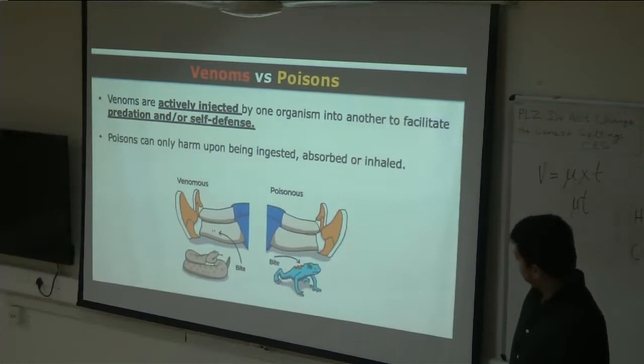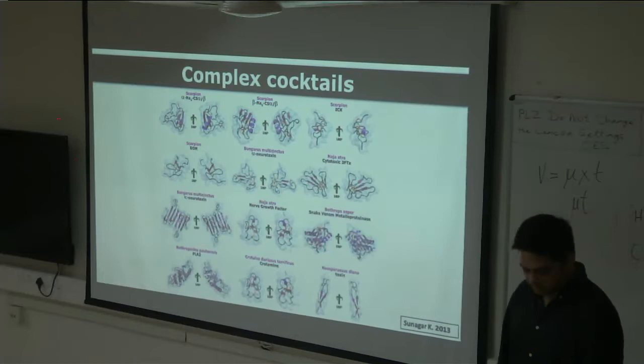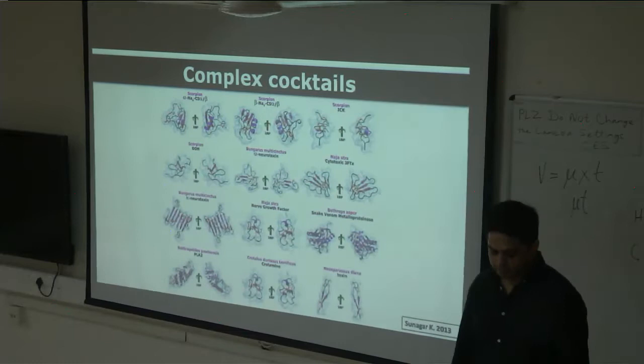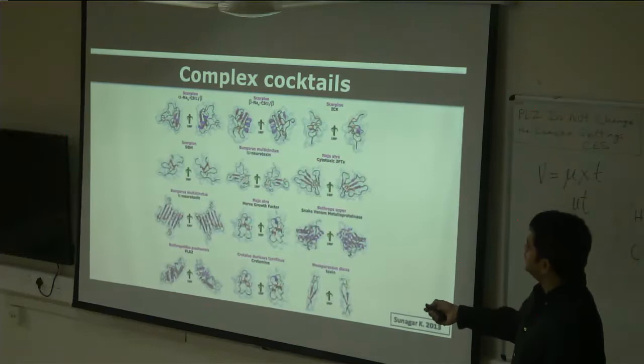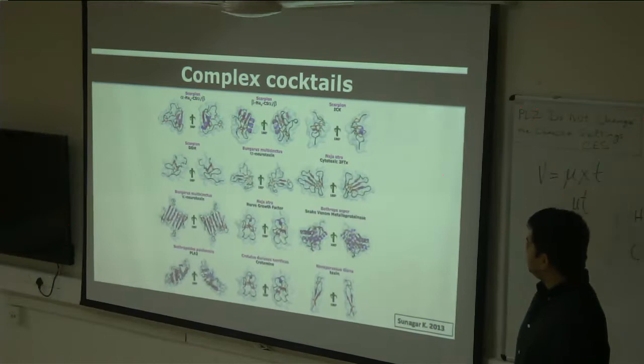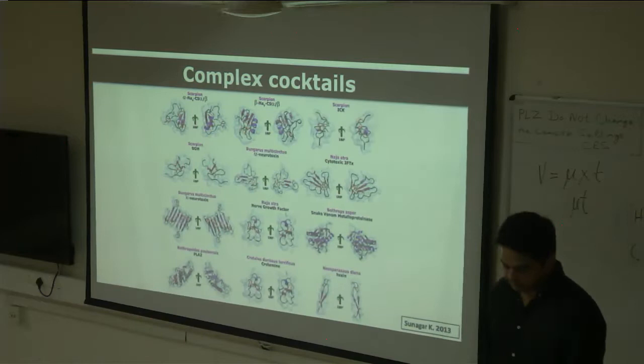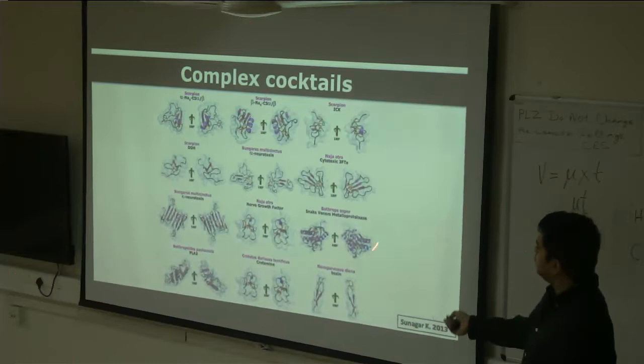Venoms are complex — they are not made up of just a single protein, but a large number of proteins. It's a complex cocktail. Each of these proteins can be very small molecules, like those found in cone snails or scorpions, but you also have really large ones like in some spiders, which are over a thousand amino acids in length. They can exist as monomers or dimerize to form complex dimers and multimers.